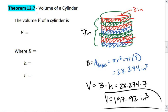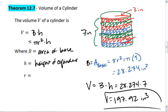Thus, our equation is that volume is b times h or pi r squared times h, where b is the area of the base, h is the height of the cylinder, and r is the radius of the base.